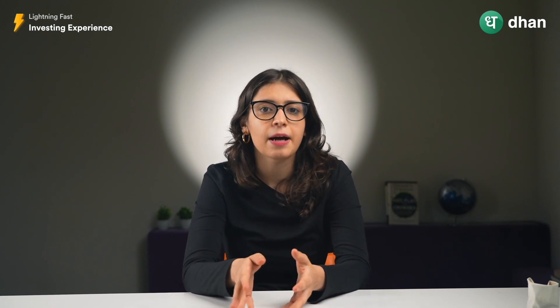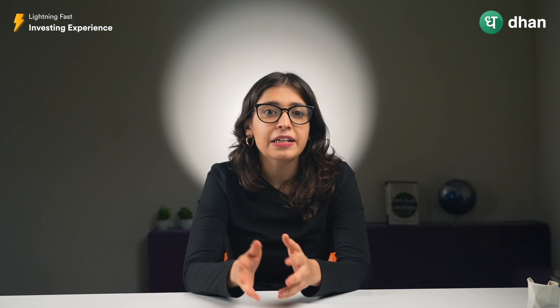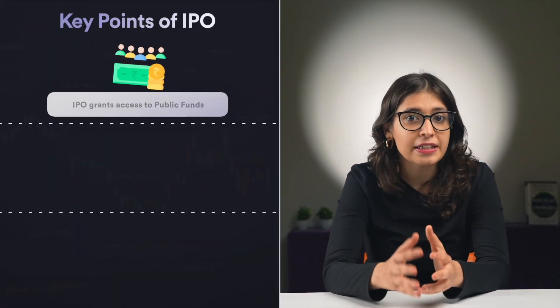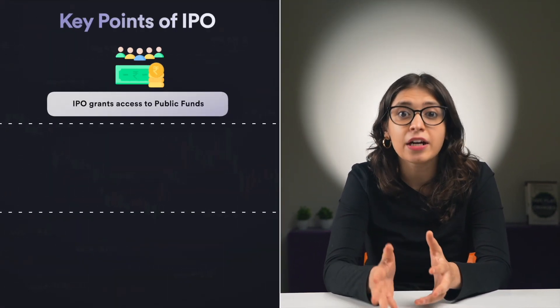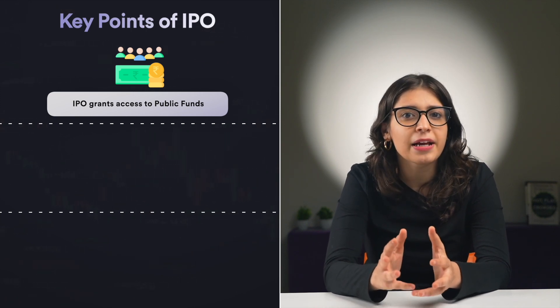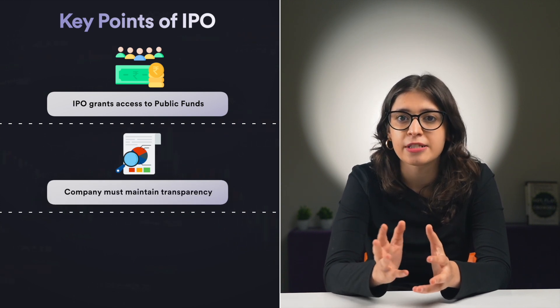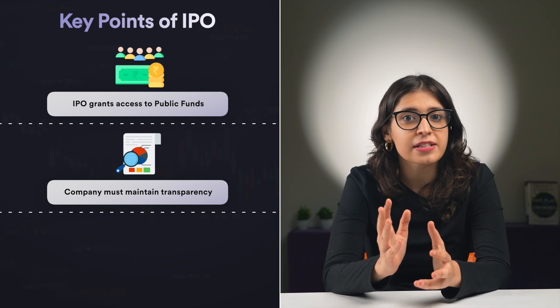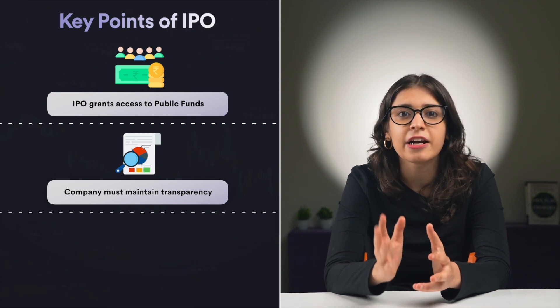In the IPO process, a privately held company offers public shares and becomes a publicly traded company. This is a defining moment for a company. The company gains access to public funds, which gradually increases its capacity. In return, public investors require the company to maintain business-related transparency. This not only satisfies regulatory compliance but also gives the company good credibility with its listing.